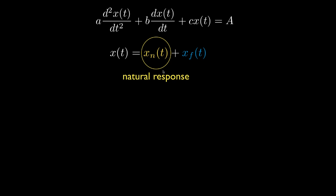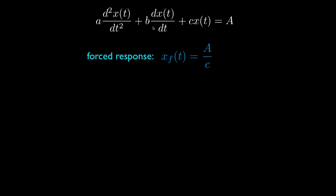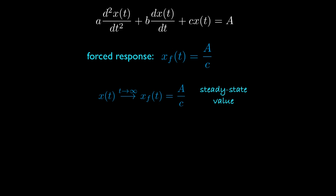The other component is called the natural response, and it's caused by the differential equation and the particular values of the equation coefficients. For a differential equation with a constant driving function, the forced response is the ratio of the driving function a to the coefficient c that multiplies x of t in the differential equation. It is useful and correct to think of the forced response as the final value that x of t will approach as time becomes very large. Because of this, we sometimes refer to the forced response as the steady state value of the function.